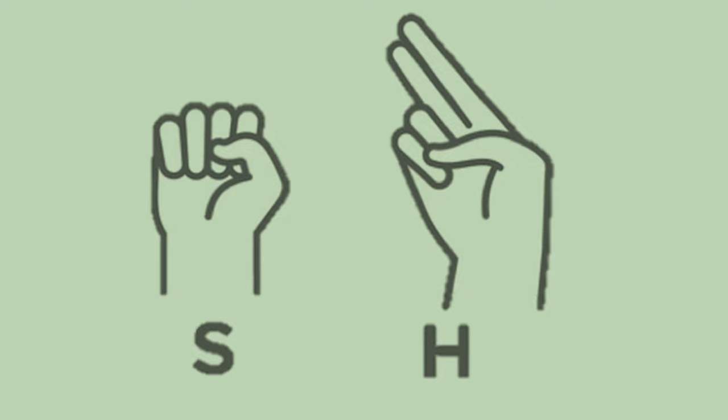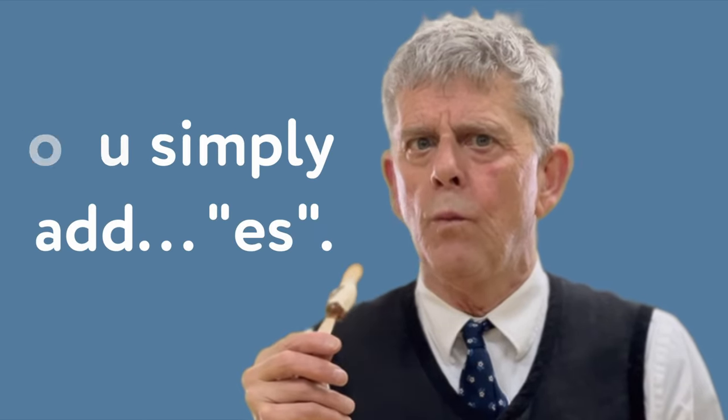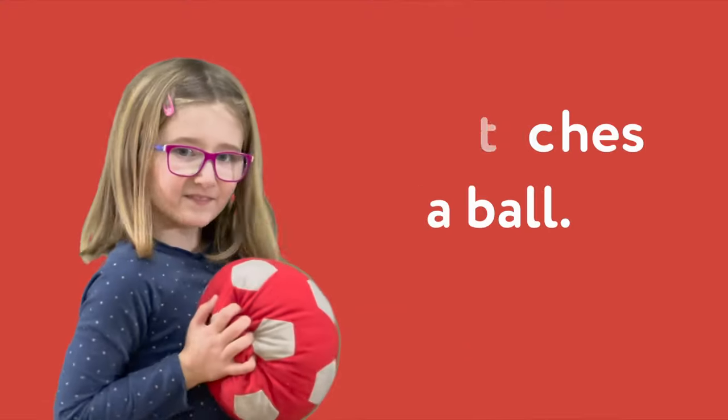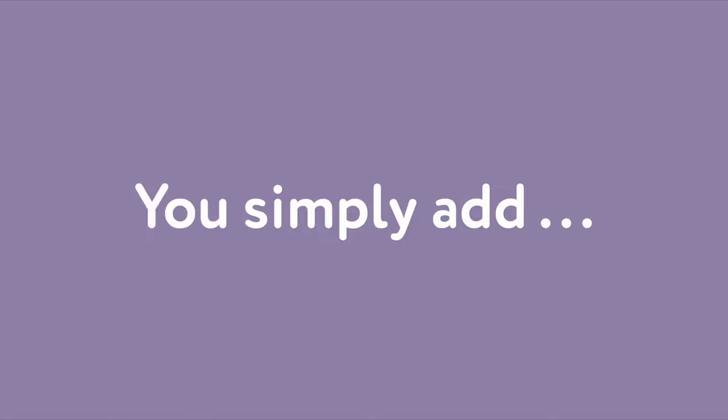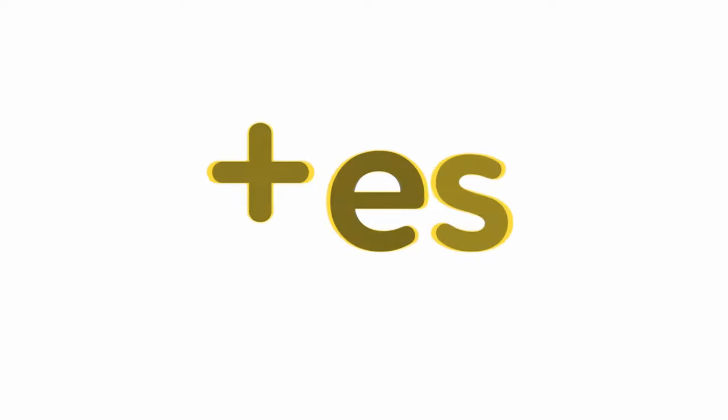When the verb ends in S, CH, SH or X, you simply add -ES. When the verb ends in S, CH, SH or X, you simply add -ES.